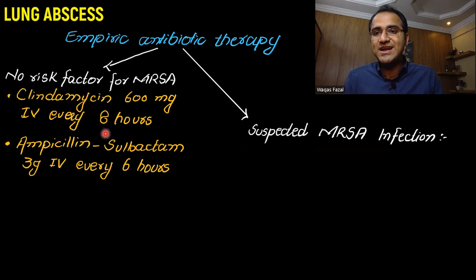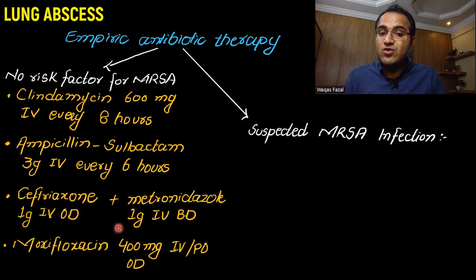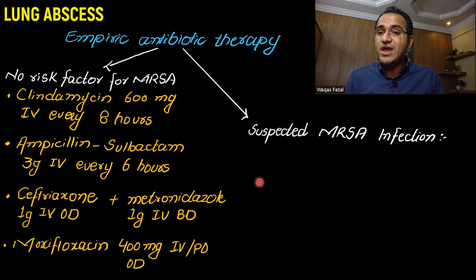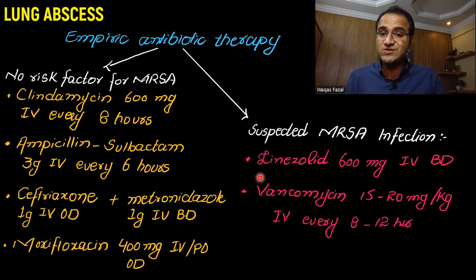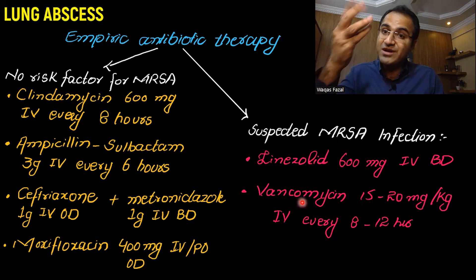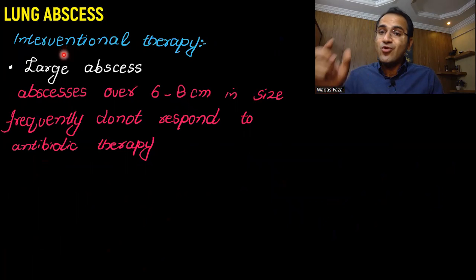Clindamycin 600 mg IV every 8 hours can be given. Ampicillin-sulbactam 3 g IV every 6 hours can be given. Ceftriaxone 1 g IV once daily with metronidazole 1 g IV twice daily — metronidazole being another drug that kills anaerobic bacteria. Moxifloxacin 400 mg IV or orally once daily. If the patient has suspected MRSA infection, use stronger antibiotics: linezolid 600 mg IV twice daily, or vancomycin 15–20 mg/kg — vancomycin is very effective for MRSA, and linezolid is even better than vancomycin.